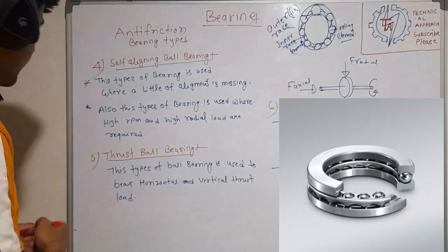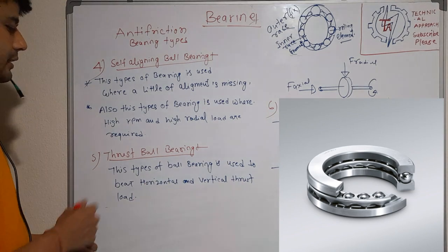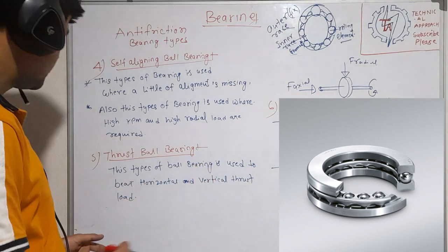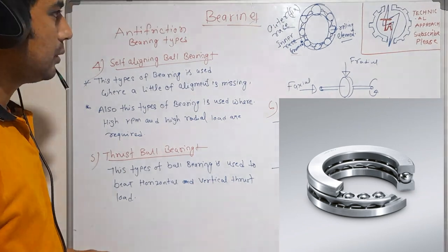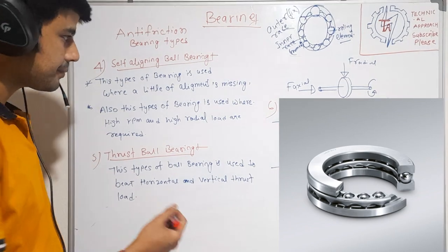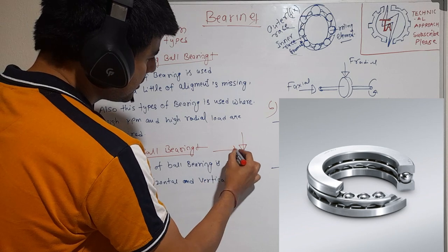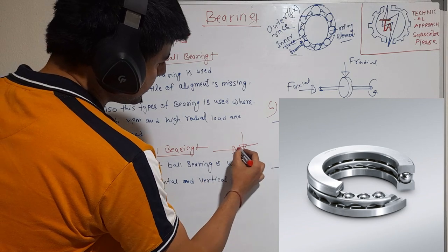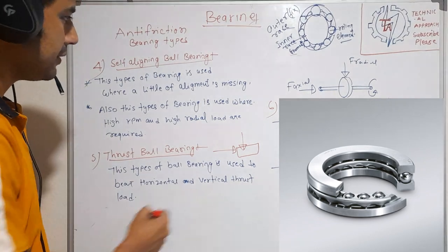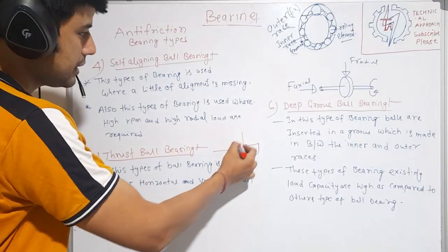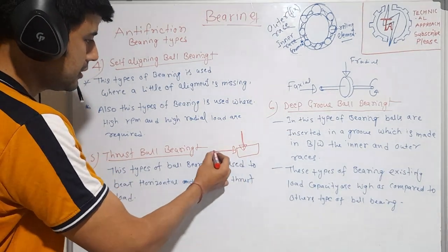The fifth type is the thrust ball bearing. This type of ball bearing is used to carry horizontal and vertical thrust loads — either horizontal or vertical, it carries both types of loads.